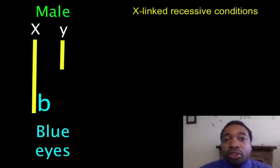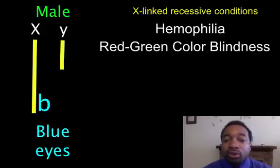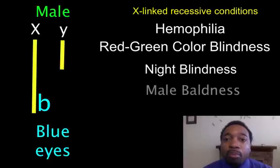There are some examples of these X-linked recessive conditions. One of them is hemophilia. Another is red-green color blindness. There's also something called night blindness. And male pattern baldness is also one of these X-linked recessive conditions.